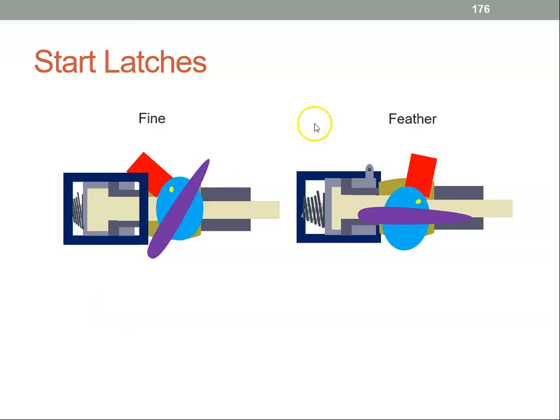When the aircraft is flying, we have the propeller at some positive angle — it can be from fine to coarse — but when the engine shuts down, we want the propeller to go to the feather position.